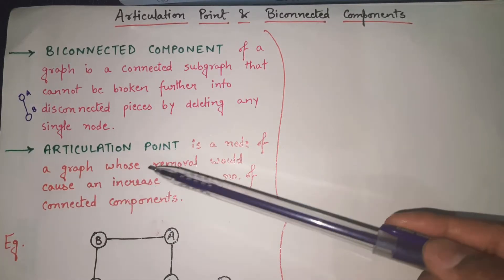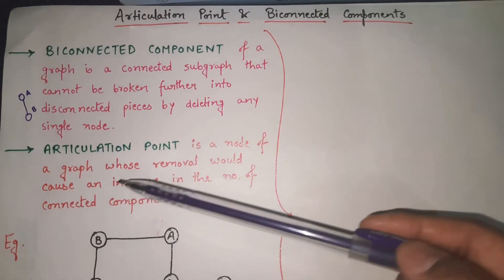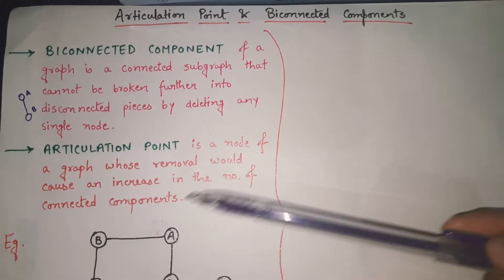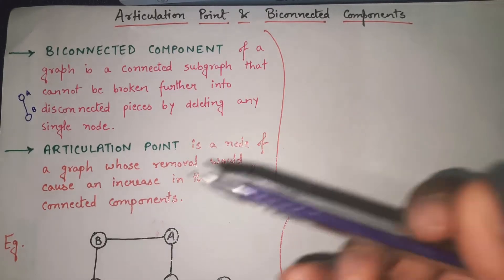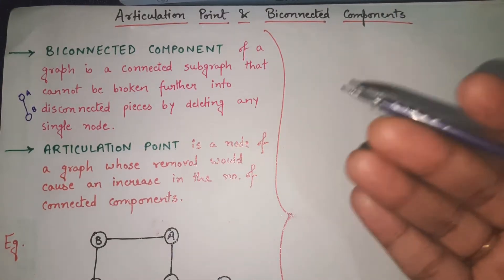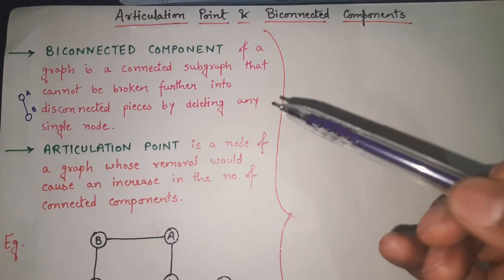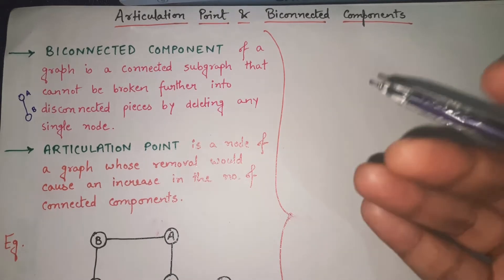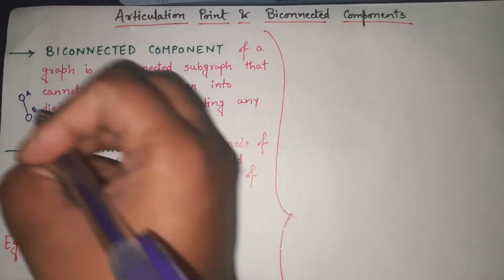Now what do we mean by articulation point? It is the node of a graph whose removal would cause an increase in the number of connected components. So if you are able to break down any graph into two or more parts, the node through which it can be divided is called the articulation point.